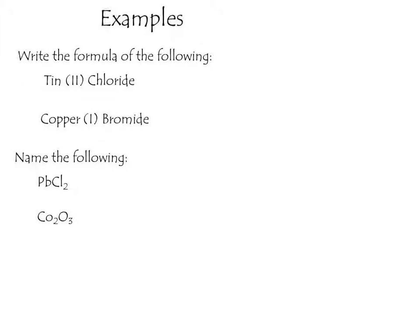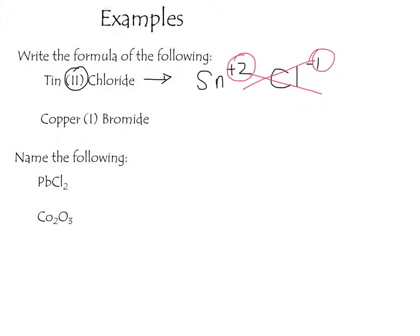Let's look at tin(II) chloride. Tin is Sn with a charge of plus 2 from the Roman numeral. Chloride is chlorine with a minus 1 charge from the periodic table. Applying the crisscross rule and turning the charges into subscripts, we end up with SnCl2.